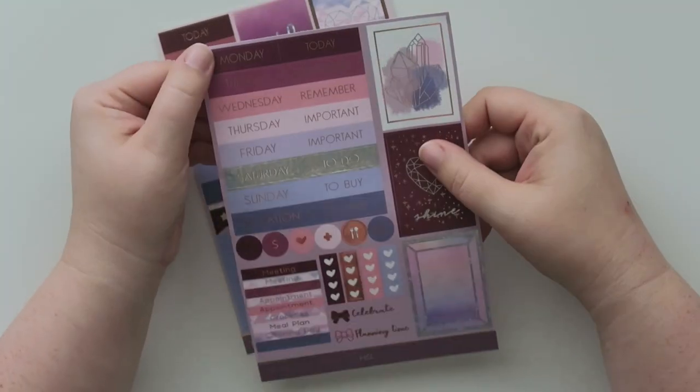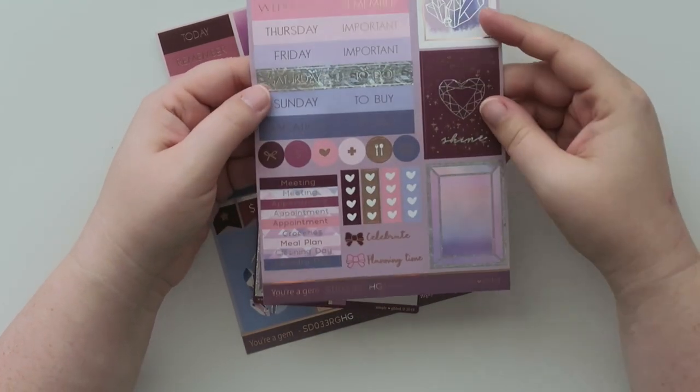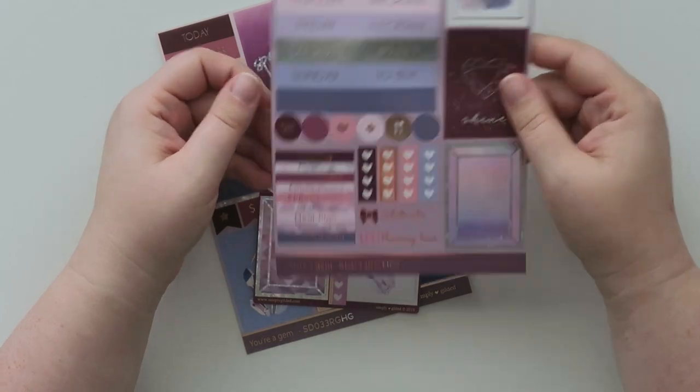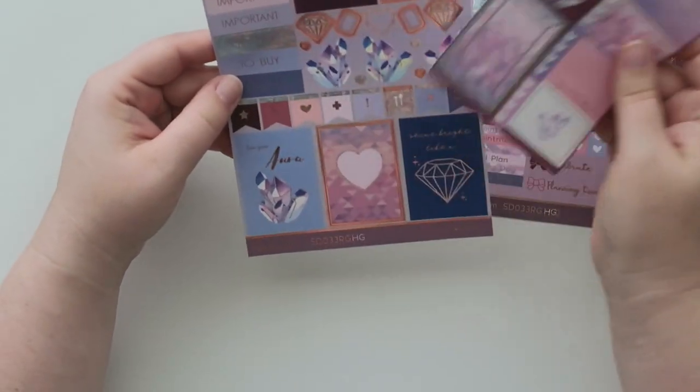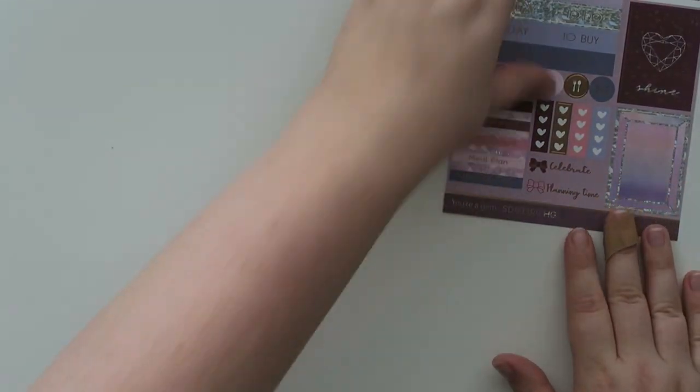And then you've got your Monday through Sunday, lots of other fun things. And there's some holographic foils and rose gold foils as well. So yeah, I think I'm going to keep these two sheets. I'm putting them in my keep stash. I don't know. I don't know what's going on y'all.